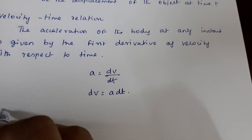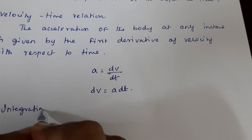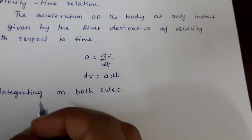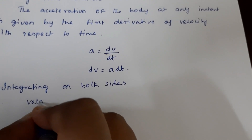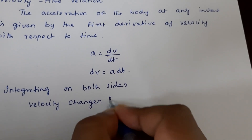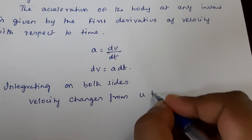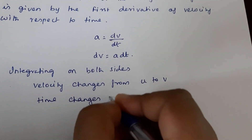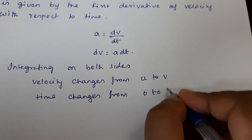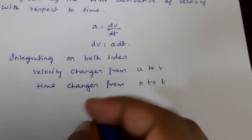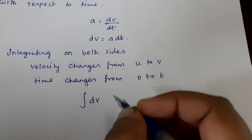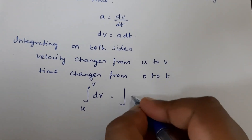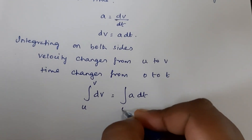Now, integrating on both the sides. When you integrate on both the sides, velocity changes from u to v — that is, initial velocity to final velocity. Time changes from 0 to t — that is, initial time is 0 and final time is t. So I am going to write it as integral dv, with velocity changing from u to v, is equal to integral a dt, with time as the variable changing from 0 to t.